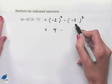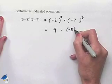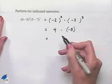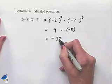Finally, we'll multiply a positive value times a negative value, giving us a negative product. 4 times 8 is 32, so our answer is negative 32.